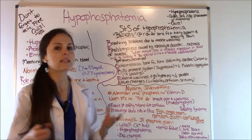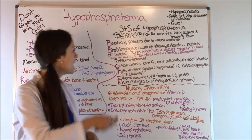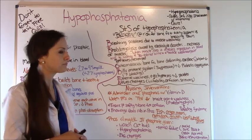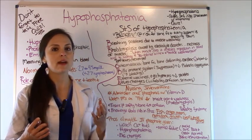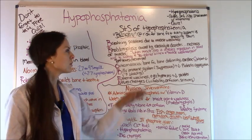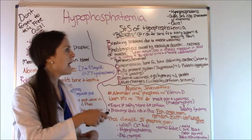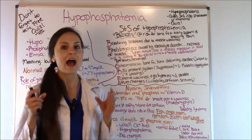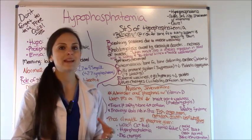The other R: deep tendon reflexes will be decreased. O is for osteomalacia — softening of the bones — so the patient may start having more bone fractures or deformed bones. Also watch for decreased cardiac output, as the heart won't be pumping as efficiently.